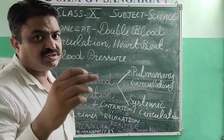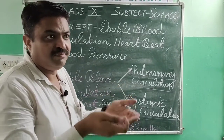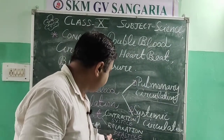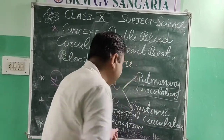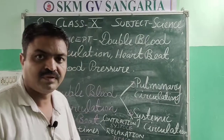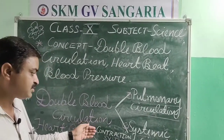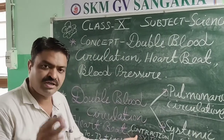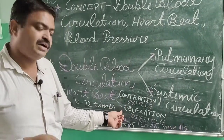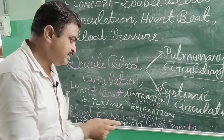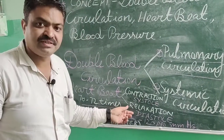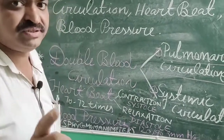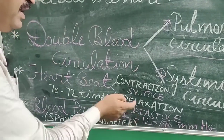During systole, we have high blood pressure. The relaxation of the heart is known as diastole. When the heart contracts, the pressure we have is systolic pressure, and when the heart relaxes, that is known as diastolic pressure.